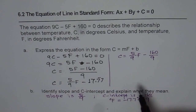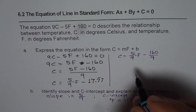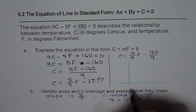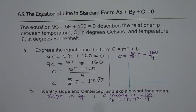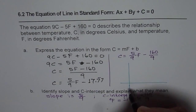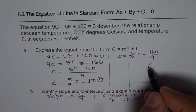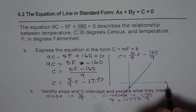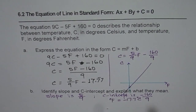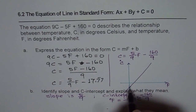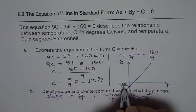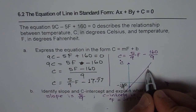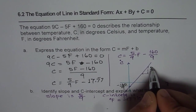The slope tells us the relationship is a straight line. If you graph this equation with Fahrenheit on the horizontal axis and degrees Celsius on the vertical axis, the C-intercept at minus 160 over 9 is where the line crosses the C-axis, and the slope, which is rise over run, is 5 over 9.